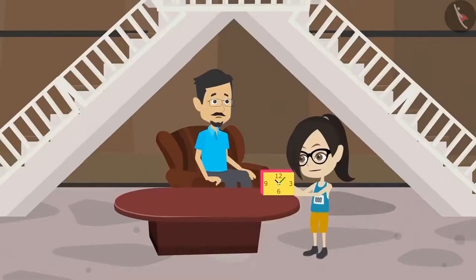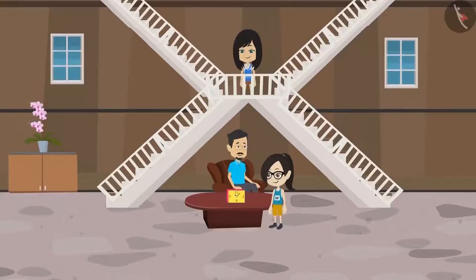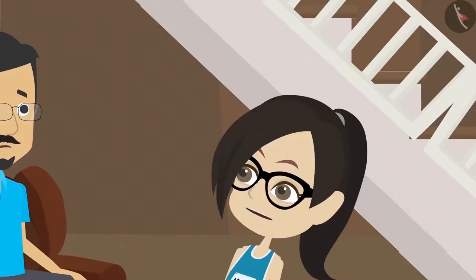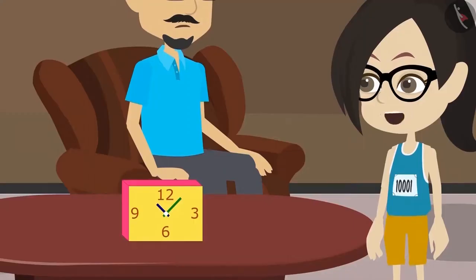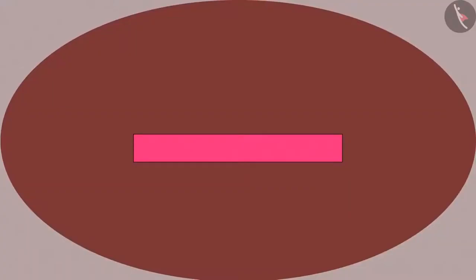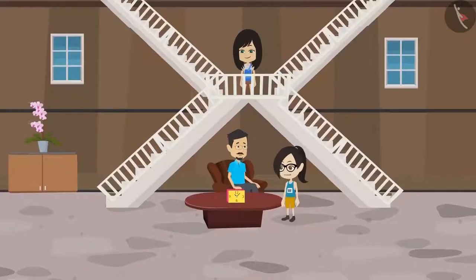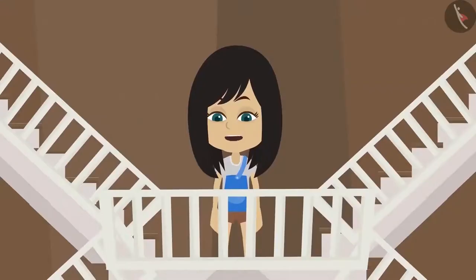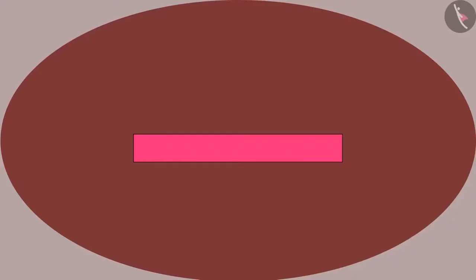Hello Uncle. Hello Vandana. Hello Neha. Look Neha, what my papa got for me. What has he got? This looks like a pink colored box. Look carefully Neha. This is not a pink colored box but a yellow colored clock. How can this be a clock? It has no hands at all. This is a pink colored box only.